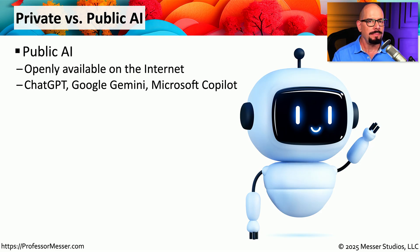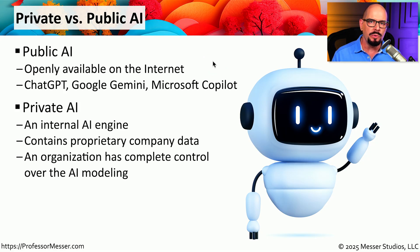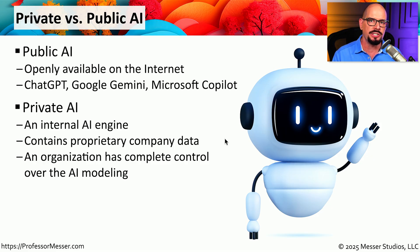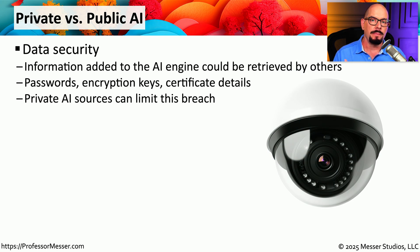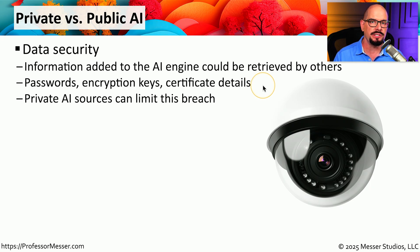There's been a lot of work on both public AIs and private AIs. A public AI is one that is publicly available on the internet — things like ChatGPT or Google Gemini are good examples. But some companies are creating their own private AI engines with proprietary company data, where the organization has complete control over the modeling. The decision on whether to use a public or private AI may be based on data security. Whenever you put information into an AI engine, there is a possibility that data could be retrieved, and if it's sensitive, it could be available for anyone on the internet to see. Running a private AI limits the scope of any potential breach.